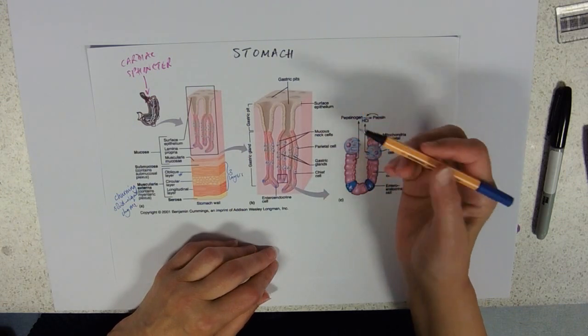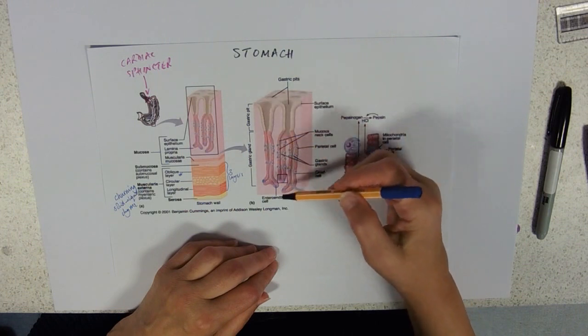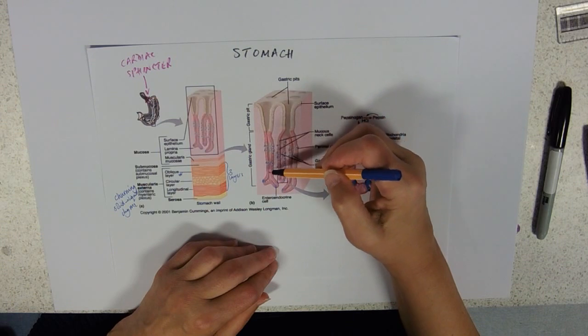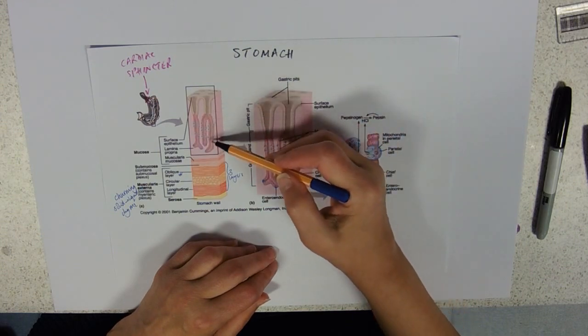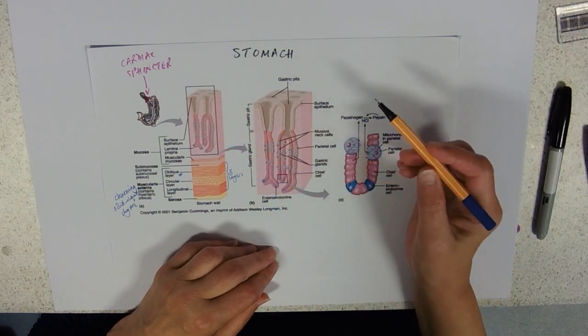The mucosal layer of the gut has these glands called gastric pits. These are just simple epithelial-lined invaginations of the mucosa.